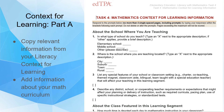The context for learning, Part A, is just like the context for learning for literacy. Most of what's in this context for learning you're just going to copy over. Some teachers teach a different set of students for math than they do for ELA, in which case that might change a little bit. Then you just want to add the information about your math curriculum in the section that asks what your curriculum is. And that's it.